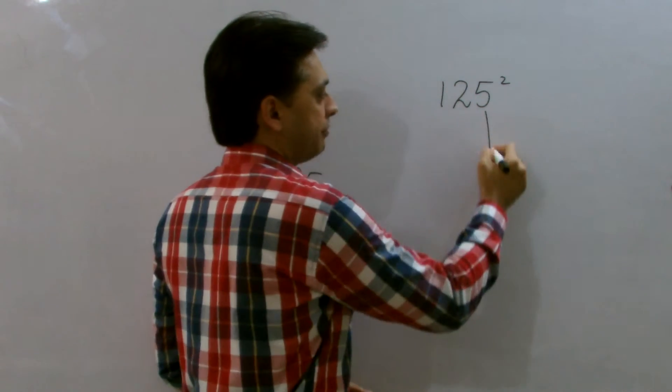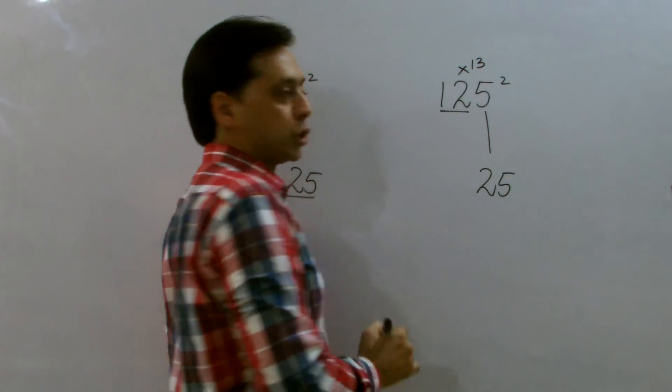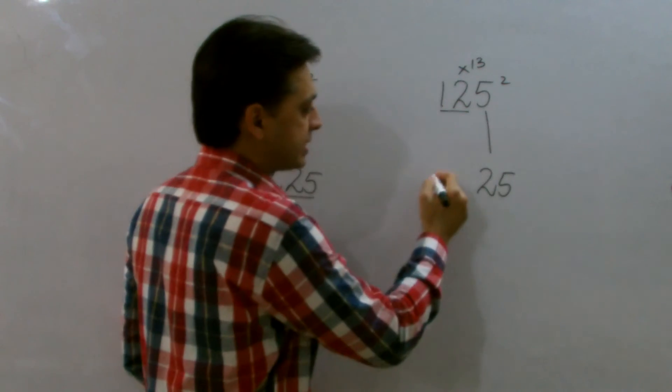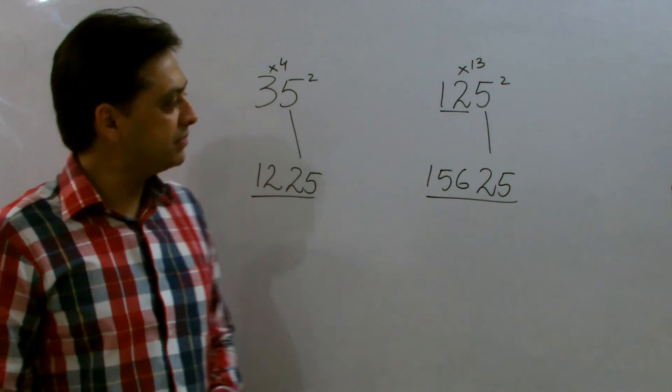You can write the square of 5, which is 25, and multiply this 12 with the next consecutive number, which is 13. So, 12 into 13, which is 156, and this could be written just next to 25, and your answer turns out to be 15625.